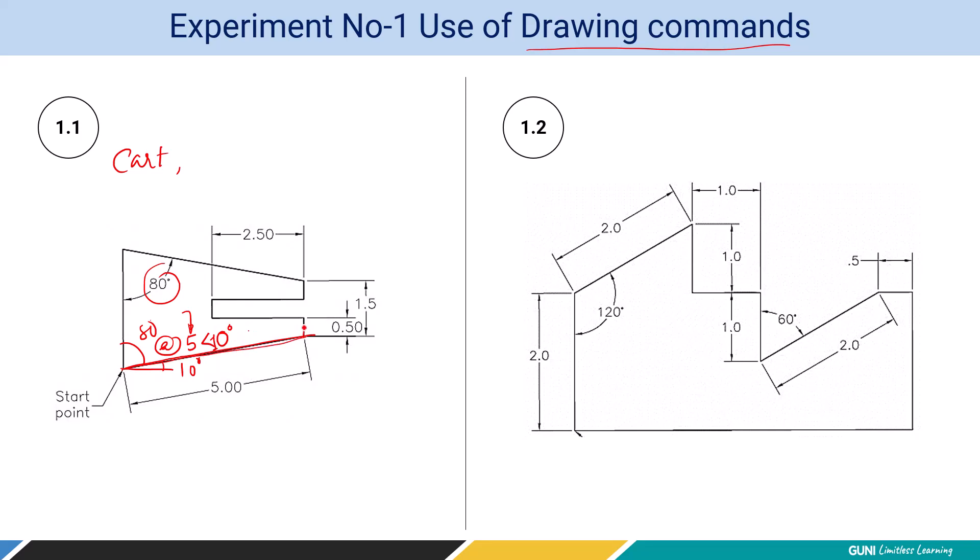After that, we are going for vertical dimensions. That is at the rate 0.5 less than 90 degree. Because in AutoCAD, the angles are taken from the right side to the left side. So 0 degree, 90 degree, 180 degree and 270.